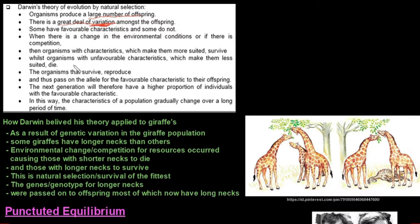So organisms produce a large number of offspring and there is a great deal of variation amongst these offspring. So this word variation is very important because some have favorable characteristics and some do not. When there is a change in the environment or the environmental conditions or if there is competition.